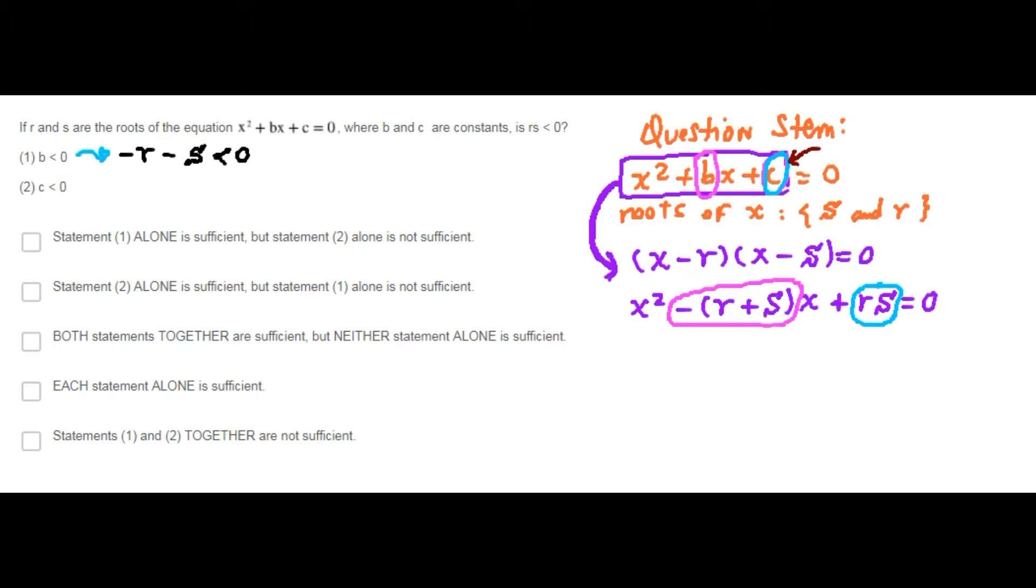But we don't need this information because with this inequality we cannot determine whether the product R times S is less than 0 or not. Therefore, statement 1 alone is not sufficient to answer the question. Choice A is discarded and choice D is discarded as well.